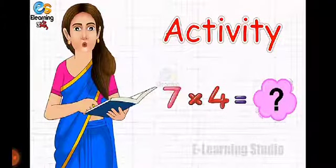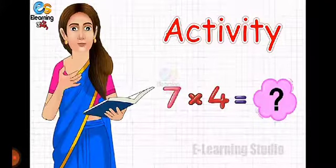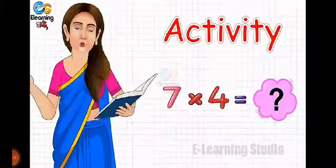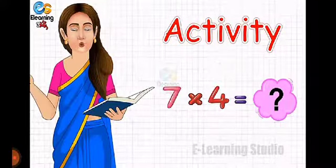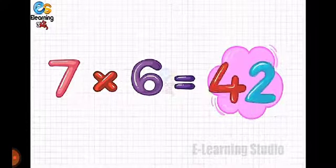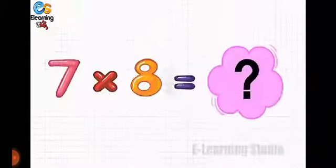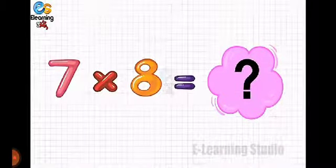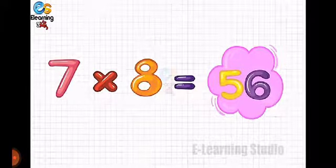Before the answer, you have to guess the right answer. Okay, now let's start activity number one. Seven sixes are — yes, come on, tell me the answer. Seven sixes are how much, children? Forty-two! That's the right answer. Seven eights are — seven eights are fifty-six.